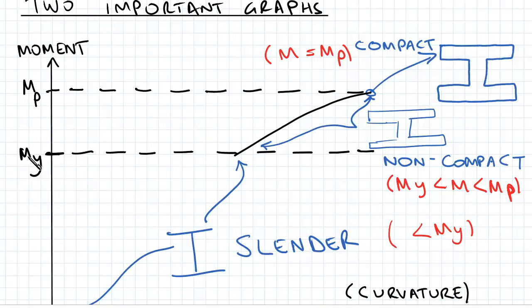Or it's non-compact because it is able to achieve yielding moment but is unable to achieve the plastic moment, just falls short. The compact sort of beams are able to extend to the plastic moment.